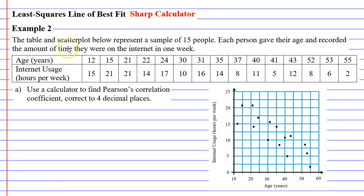This example says the table and scatterplot below represent a sample of 15 people. Each person gave their age and recorded the amount of time they were on the internet in one week. Looking at our table of values, we can see our young people: a 12-year-old was on the internet for about 15 hours in a week, whereas someone 55 years old was only on for two hours per week. Looking at the scatterplot, we can see that the younger group are on the internet for longer, and as we progress to our older group, we have less internet usage.